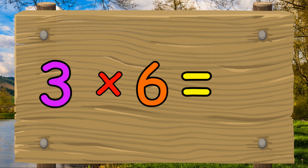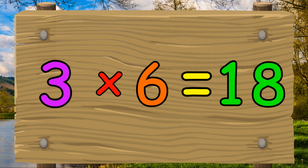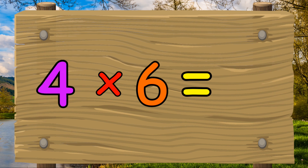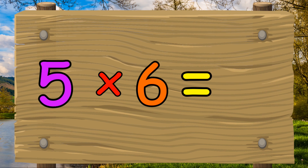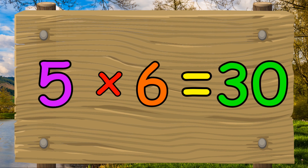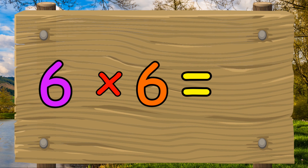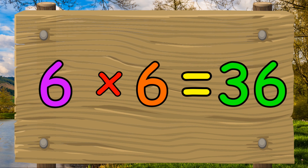Three times six equals eighteen. Four times six equals twenty-four. Five times six equals thirty. Six times six equals thirty-six.